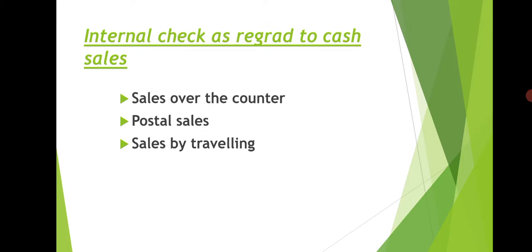The next topic is internal check as regards to cash sales. For efficient working of a sales department, its activities can be arranged as sales over the counter, postal sales, and sales by travelling agents. For sales over the counter, a separate salesman should be appointed for each counter and given a separate sales number book of different colors. When a salesman sells goods, he should prepare three copies of cash memo — one for the sales summary and two handed to the customer, instructing them to make payment at the cash counter.